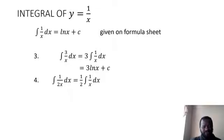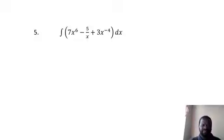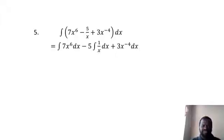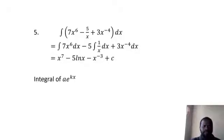Here's an example: the integral of 3 over x dx. You write 3 over x as 3 times 1 over x, so it becomes 3 times the integral of 1 over x, which is 3 ln x plus c. For question four, one over 2x — since 2x is in the denominator, this is one half times one over x. The integral of half times 1 over x dx is one half ln x plus c. For question five, you have three terms; integrate each term separately.